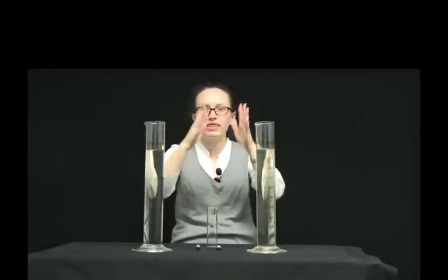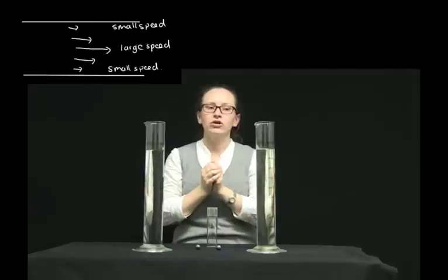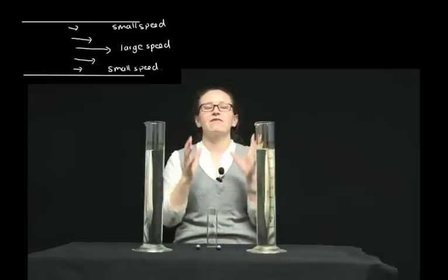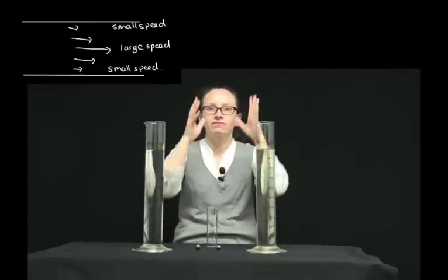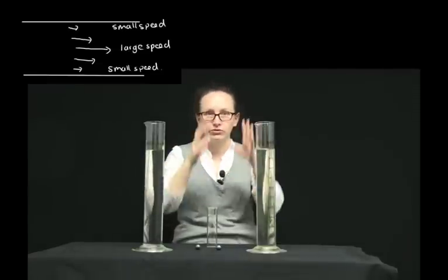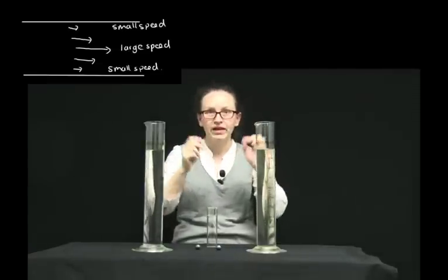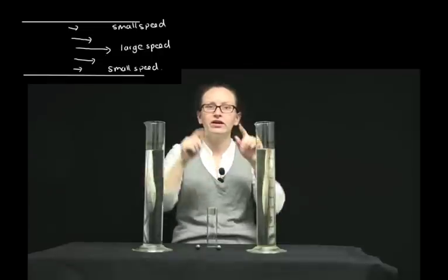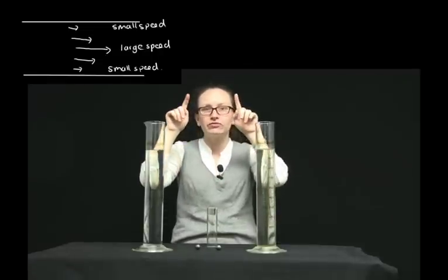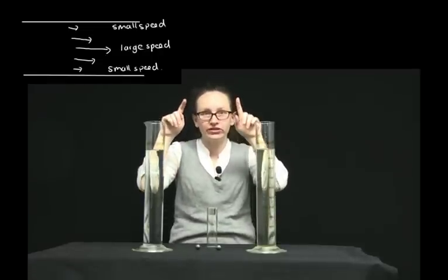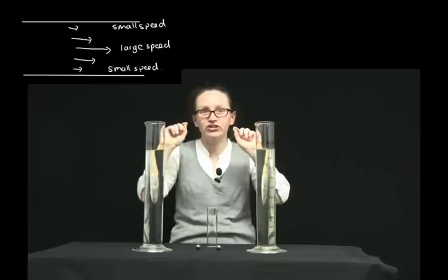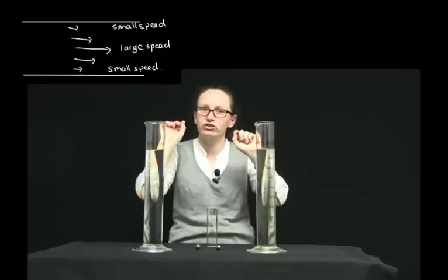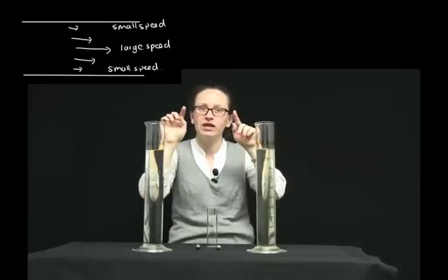So if we have a viscous fluid flowing through a pipe, at the edges of the pipe, which is stationary, the fluid flows very slowly because there's lots of friction there trying to stop it flowing.